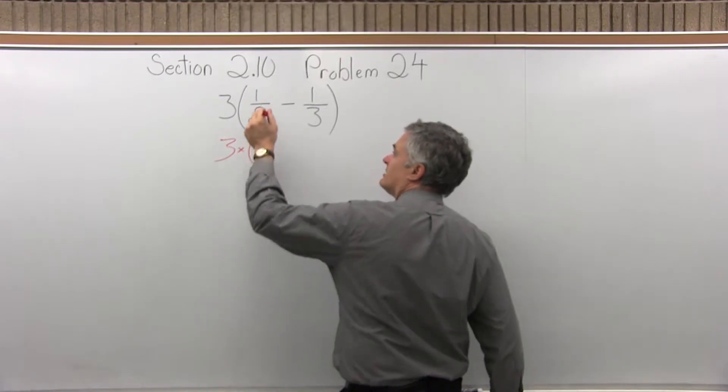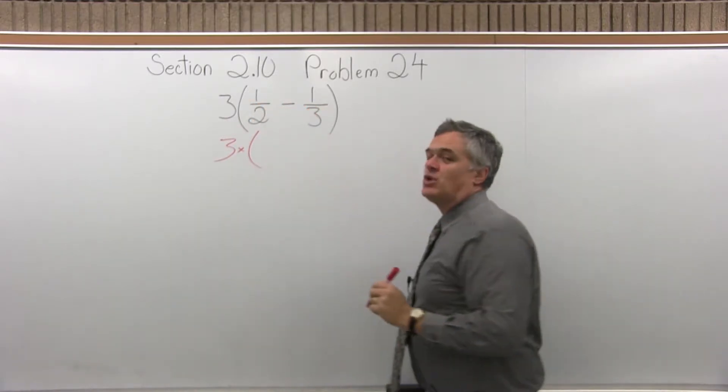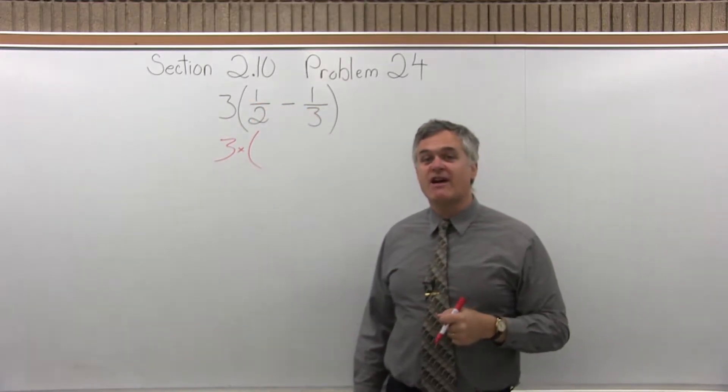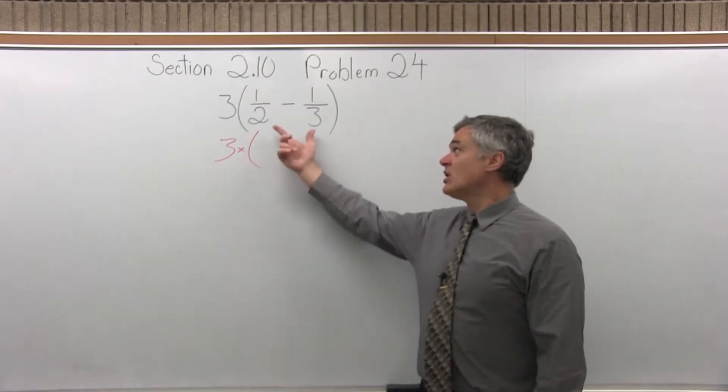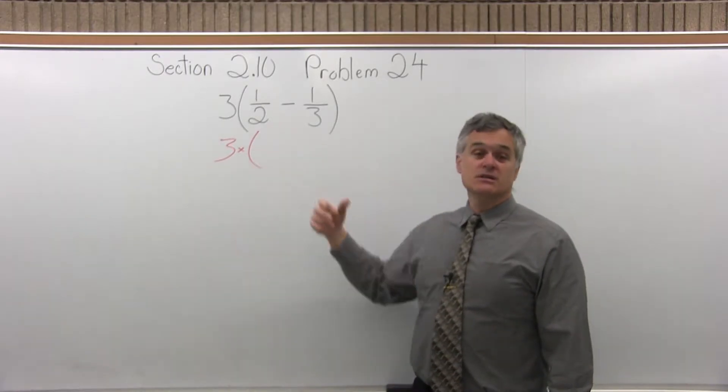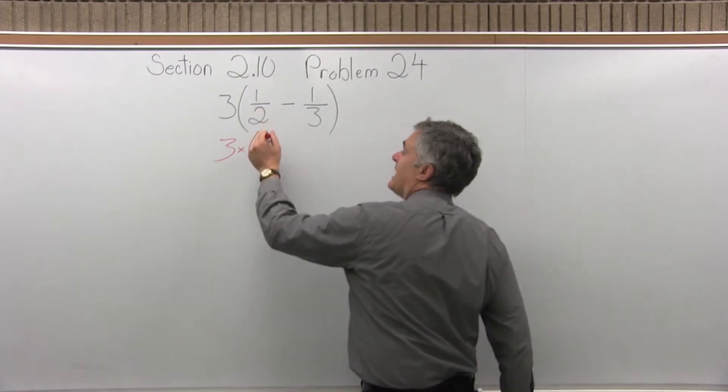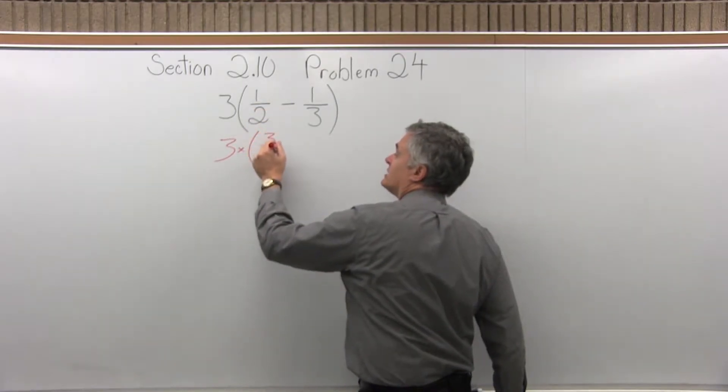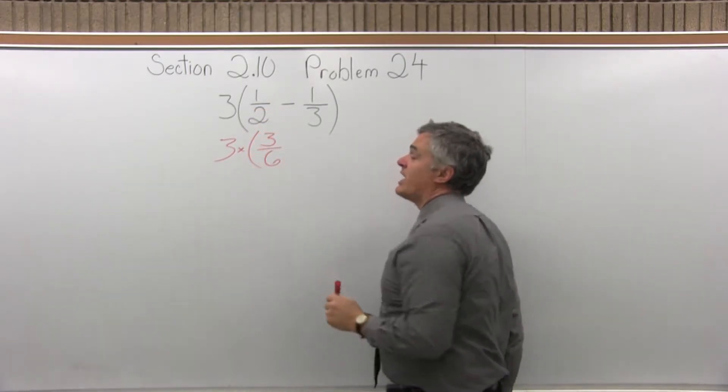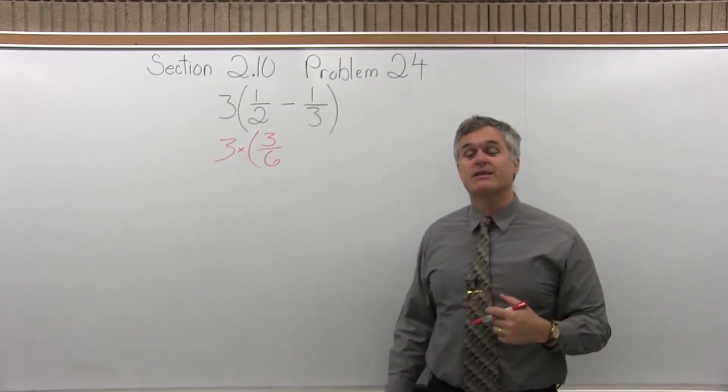Three times, and then in parentheses, I need to make a common denominator in order to subtract one-half minus one-third. So if I have denominators of two and three, six would be a very good choice. So the one-half, I can write as three over six. That's an equivalent fraction. Three over six will reduce back down to one-half.